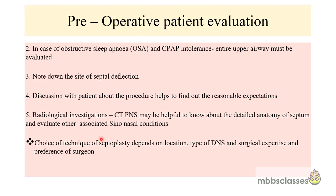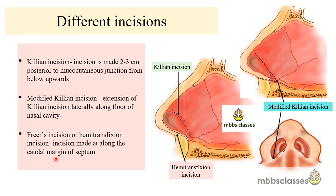After proper patient evaluation, septoplasty can be done by traditional techniques or by using the nasal endoscope — endoscopic-directed septoplasty. The choice of technique depends on the location, type of DNS, and the surgical expertise and preference of the surgeon. There are mainly three types of incisions: Killian's incision, modified Killian's incision, and Freer's incision.